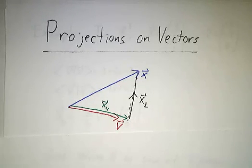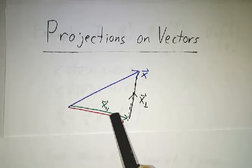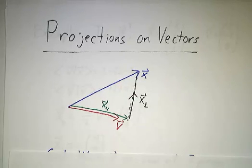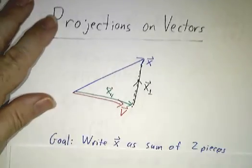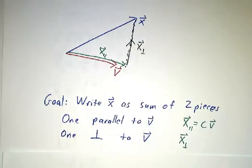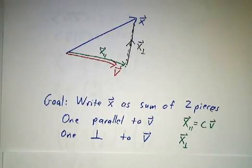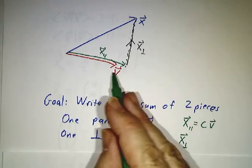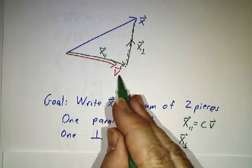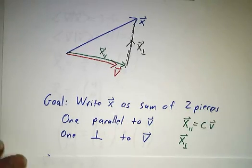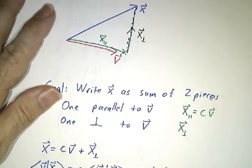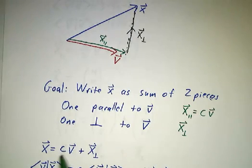The question is, if you're given x and v, how can you figure out what is x-parallel and what is x-perp? And the key is to use inner products. You see, x-parallel has to be some multiple of v. It's in the same direction as v, so it's just some number c times v. So we write x as a constant times v, that's x-parallel, plus x-perp.